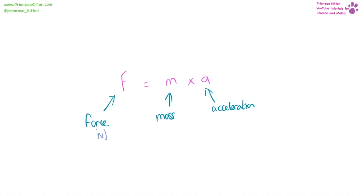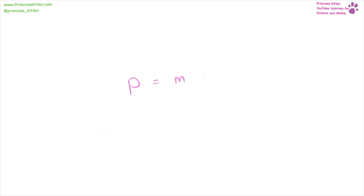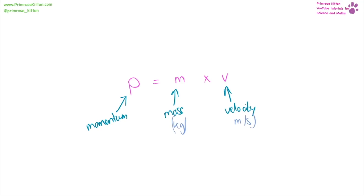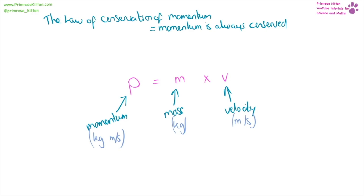Force equals mass times acceleration. Force is measured in newtons, mass in kilograms, and acceleration in meters per second squared. Momentum is mass times velocity. Mass is measured in kilograms, velocity in meters per second, and momentum is measured in kilogram meters per second — note there is no dividing line, just a space. The law of conservation of momentum says momentum is always conserved, meaning momentum before equals momentum afterwards. So if two objects collide, their total momentum before equals the total momentum of the colliding objects afterwards.